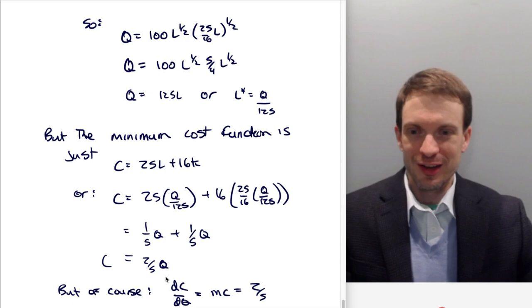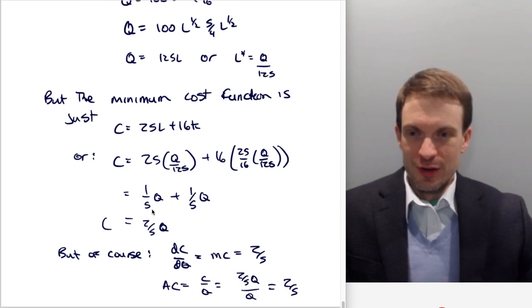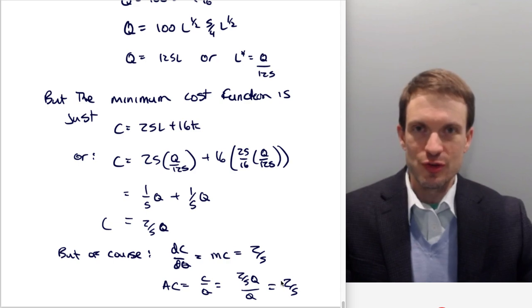As you're staring at this, you're like, wait a second, I can differentiate that. Sure you can. And it's two fifths, right? That's marginal cost. Isn't that cool? So we got the marginal cost function from this Cobb-Douglas cost minimization problem. And what about average costs? Well, we could take this cost function, divide this thing by Q and here average cost is just two fifths.